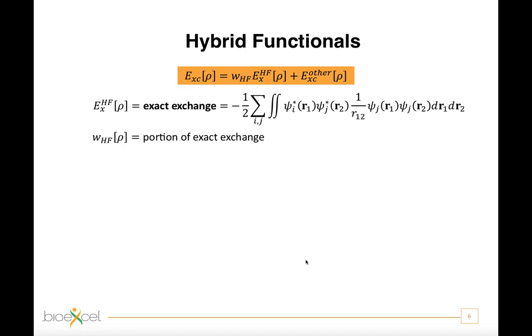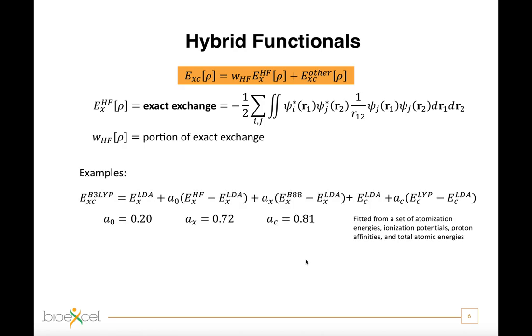With the rest of the exchange-correlation energy from other sources, both ab initio and empirical, and in particular from the generalized gradient approximation. A popular example of hybrid functional is the B3-LYP functional, derived combining the B-LYP correlation with the exact exchange in this peculiar way. And another one is the PBE0 functional.